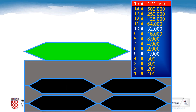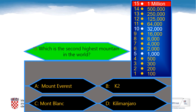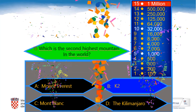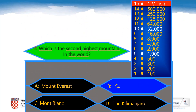Ladies and gentlemen, question number 15 finally — the last of 15 possible questions. Which is the second highest mountain in the world? A: Mount Everest, B: K2, C: Mont Blanc, D: Kilimanjaro. And the correct answer is K2. Congratulations — you've just won one million points!